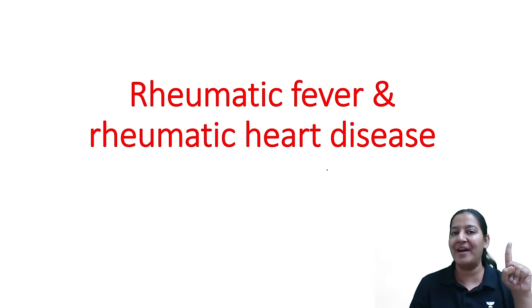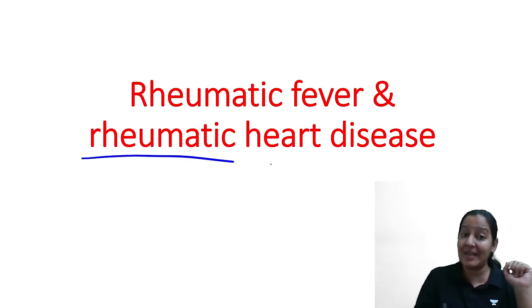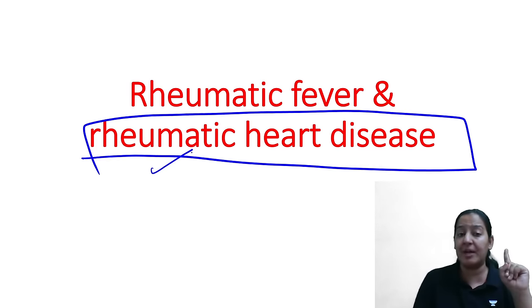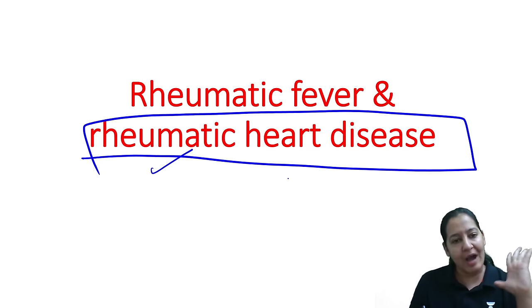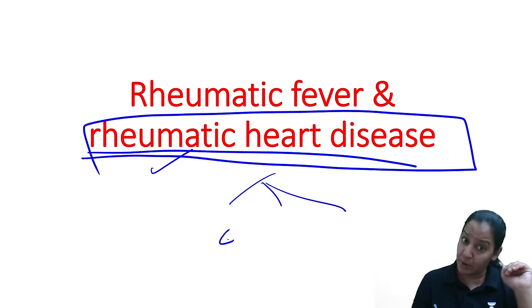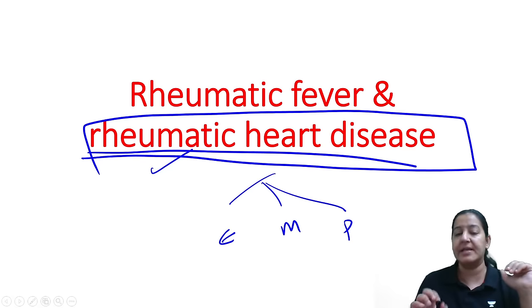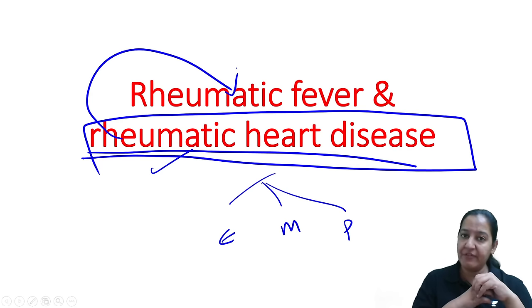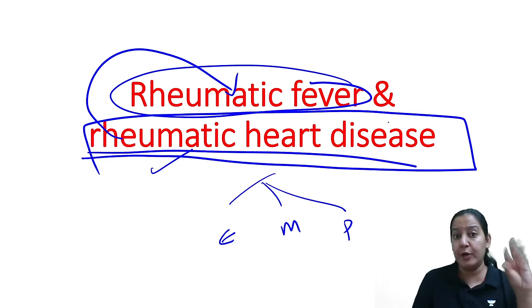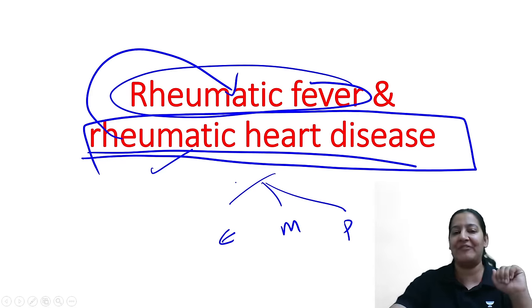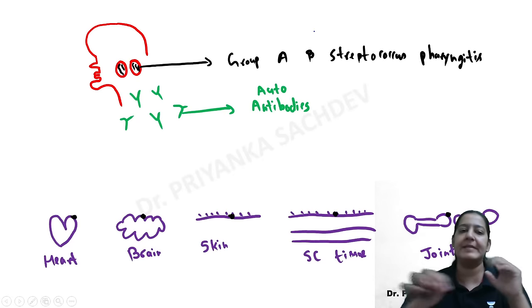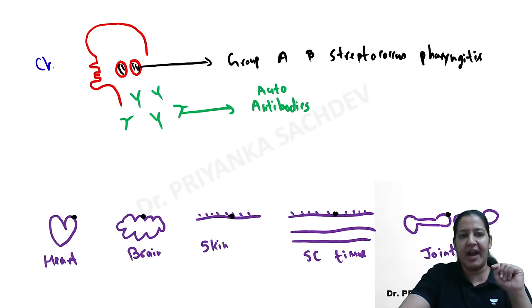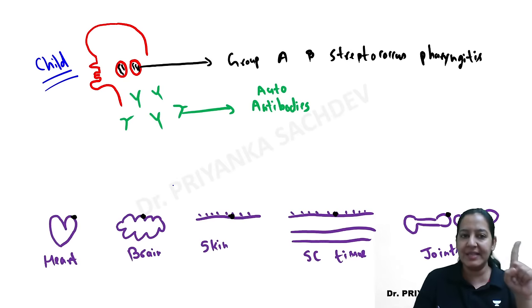Before teaching rheumatic heart disease, I want to teach you rheumatic fever. Rheumatic fever is an umbrella term that includes five diseases, one of which is rheumatic heart disease. To understand rheumatic fever, consider this story: a child gets tonsillitis or pharyngitis — very common in children — caused by a bacterium called Group A beta-streptococcus.